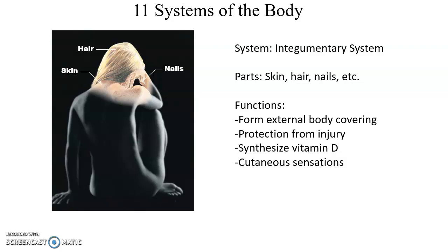The skin is also the beginning of the process of making vitamin D — we make all the vitamin D we need assuming we get sufficient light, and that process starts in the skin. The integumentary system also provides cutaneous sensations such as touch, tickle, warmth, and cold.